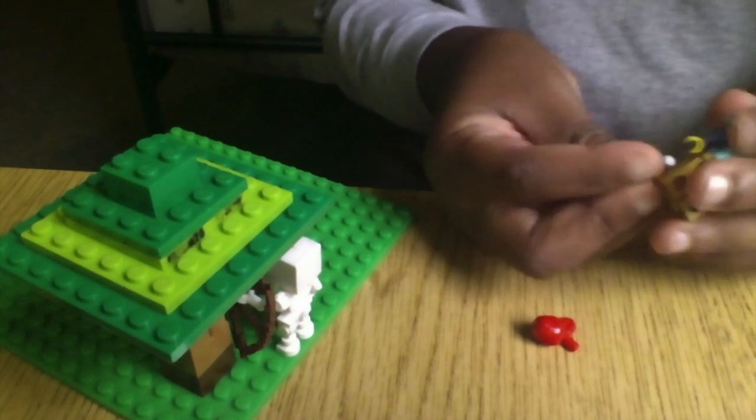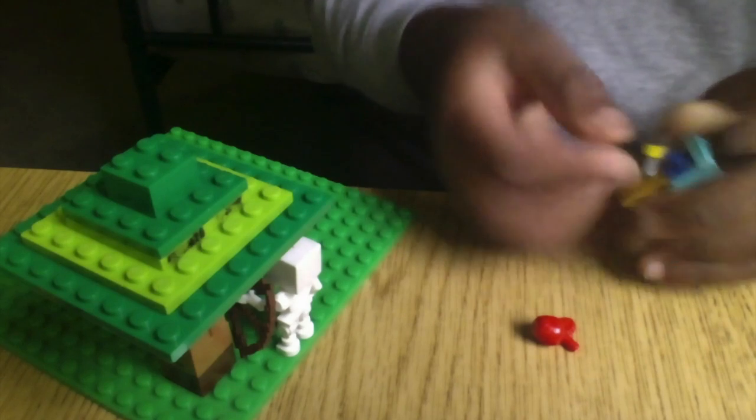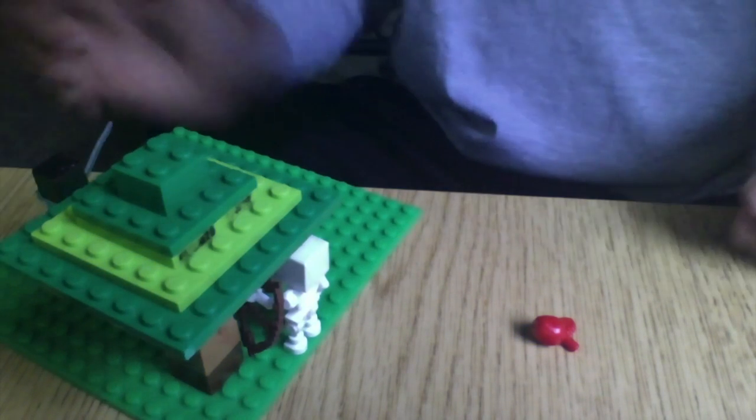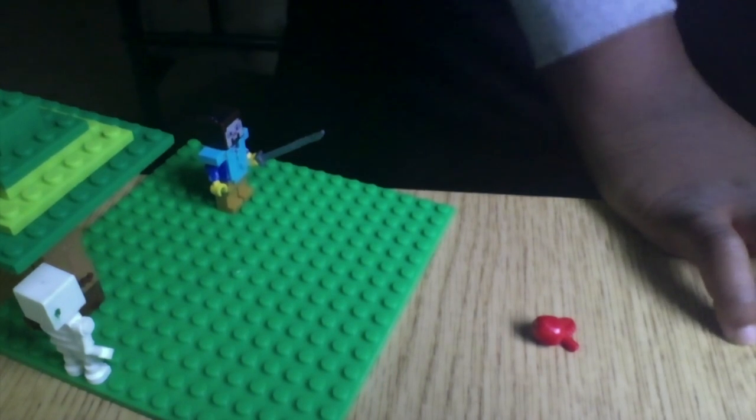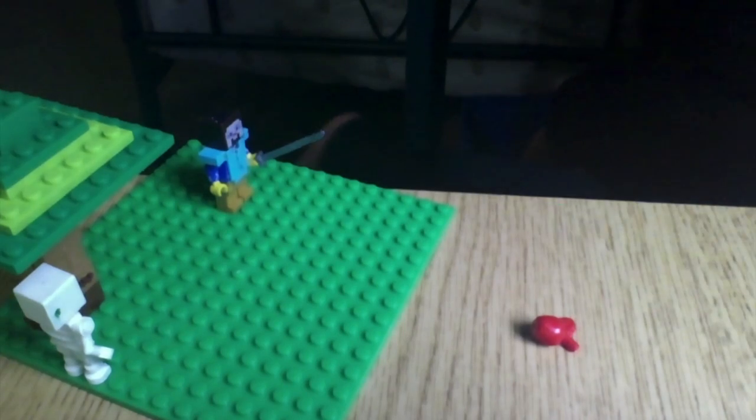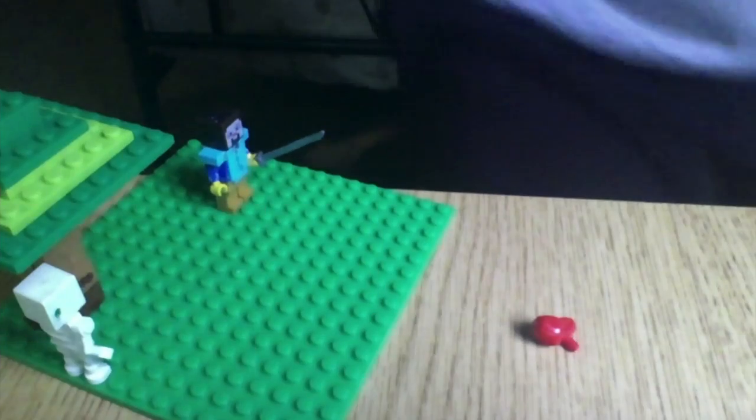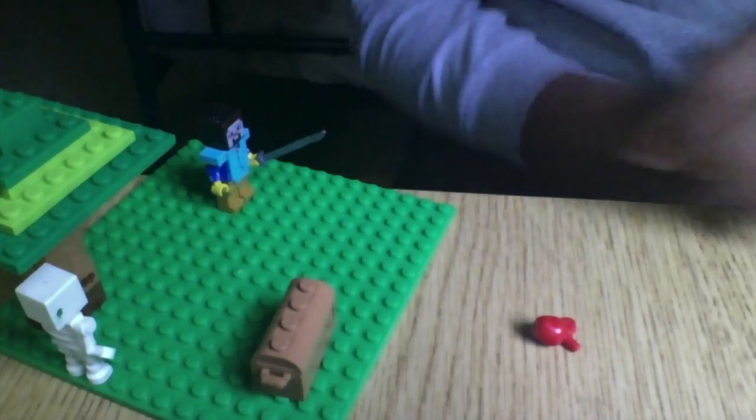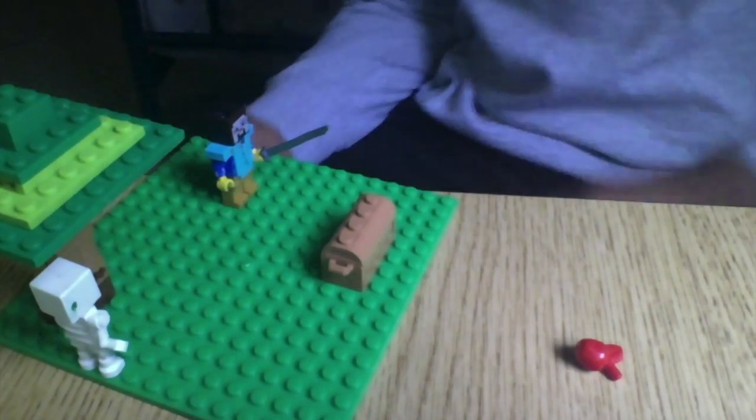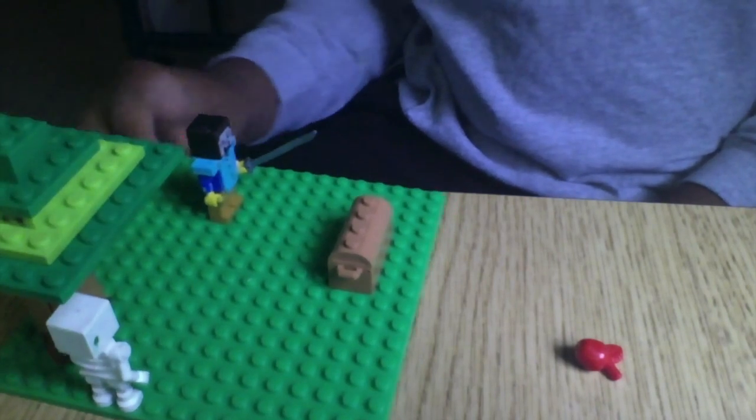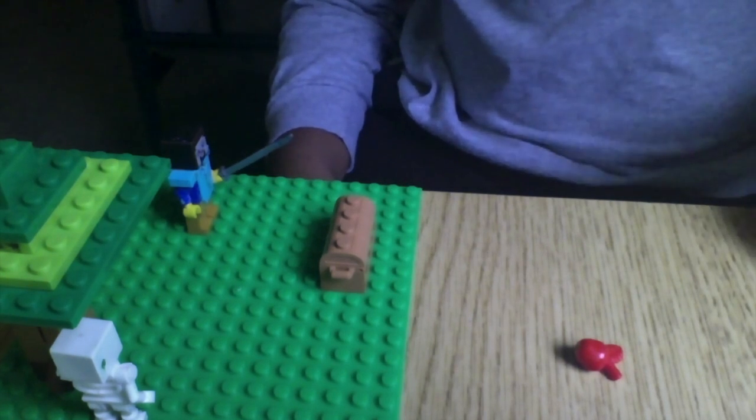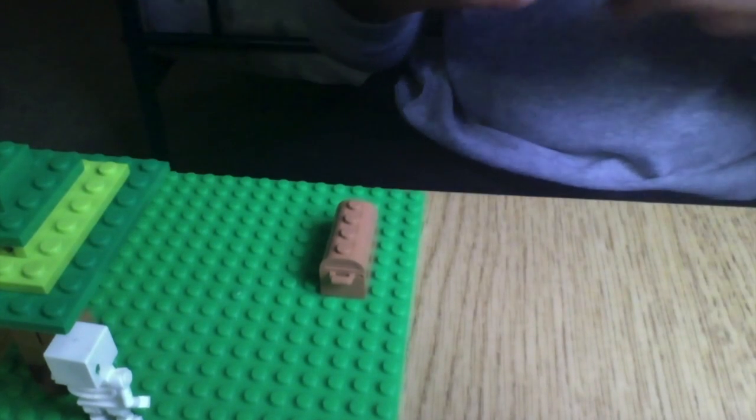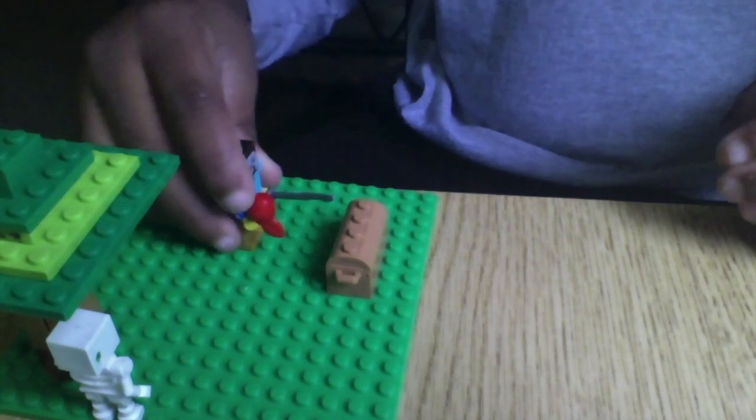And then the sword, you want to give to Steve. You can put it right there. And then this is part of the set. You need a chest. You want your chest to go right there. You don't need this exact armor. You can use any armor. And you want to give him some food. It doesn't matter what hand you put the food in.